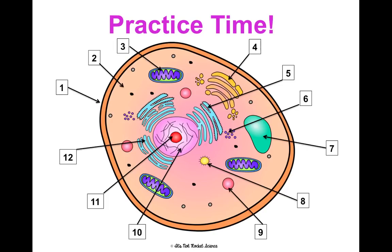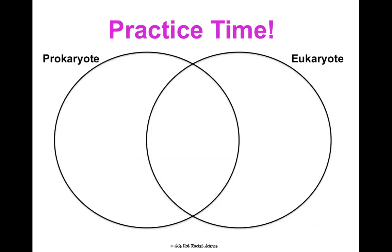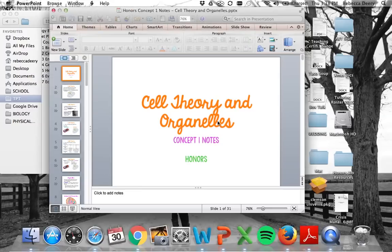Take a minute and try to label the animal cell — all 12 parts — without looking at your notes, then go back and check how you did. Do the same thing for the plant cell. There will be repeats since they share some organelles. Then compare and contrast prokaryotic and eukaryotic cells, and animal cells and plant cells, to make sure you have all this information organized in your brain. And that is concept one.